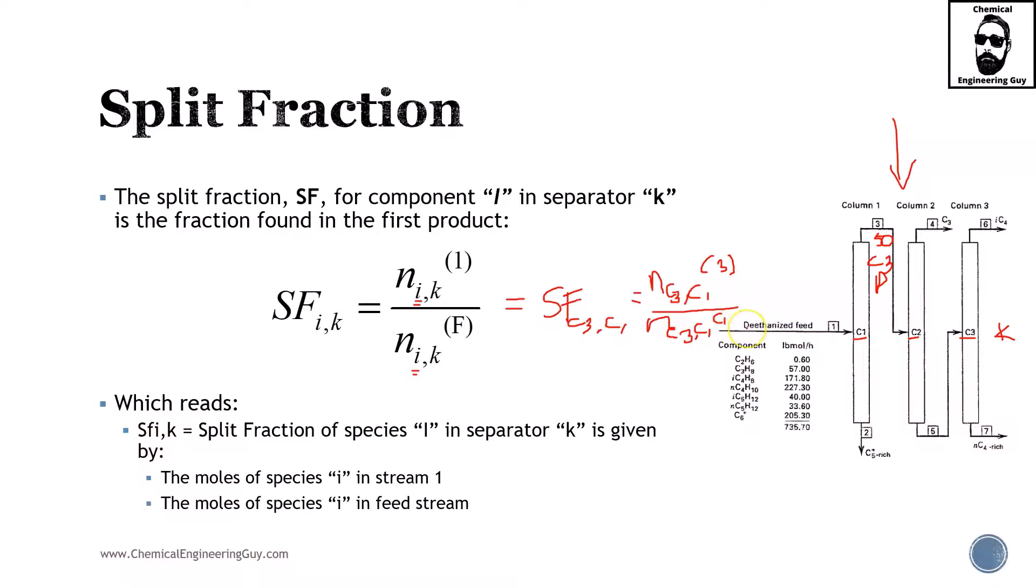Divided by the inlet - the total amount of propane in column 1 in the feed. Technically I won't use 'feed' because we could confuse it here. If we were talking about C2, it wouldn't be F, it would be stream number 3. So let me use stream numbers. Using numbers, the total amount of propane going out of C1 is 50, and the total entering is 57. So that will be the split fraction.